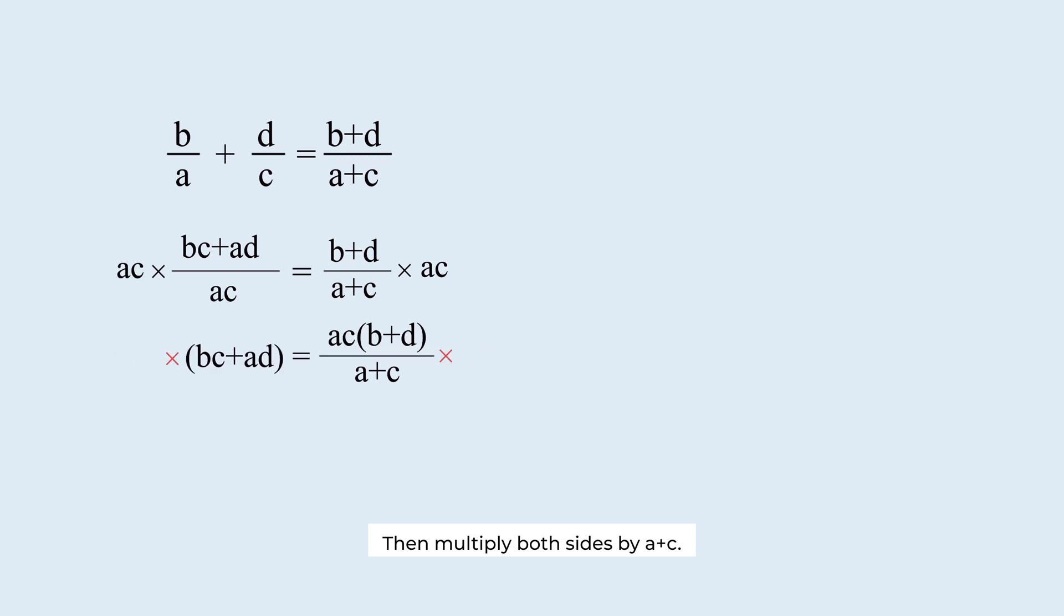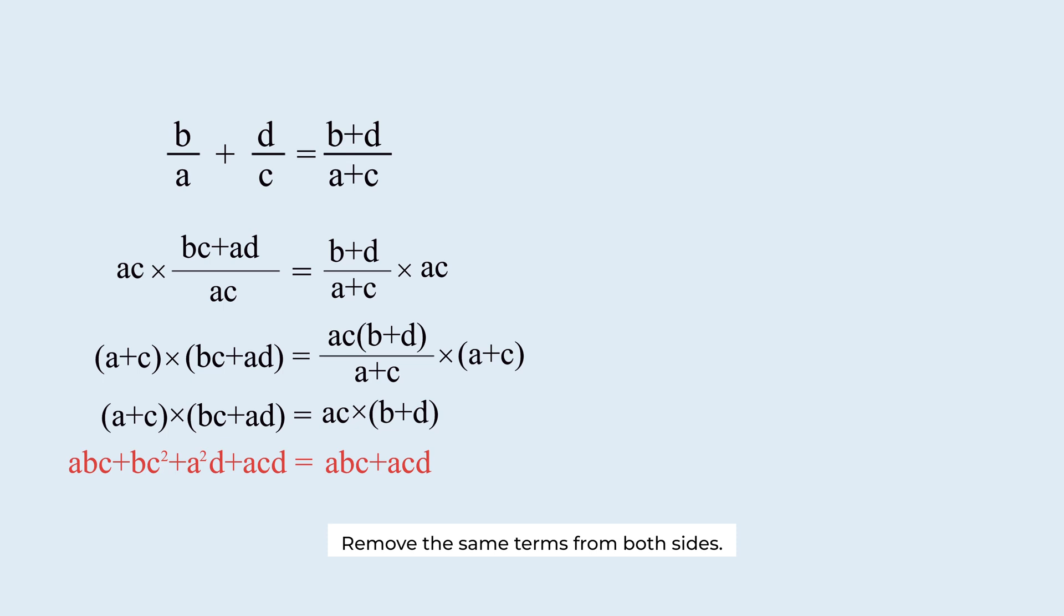Then multiply both sides by a plus c. Expand the equation. Remove the same terms from both sides. This is the final equation.